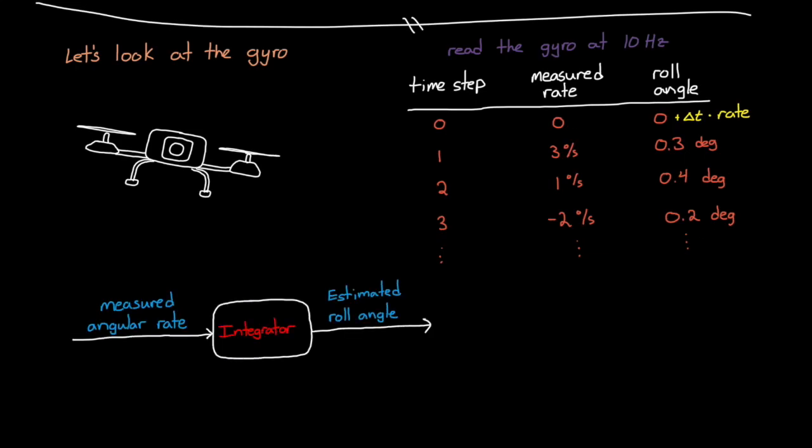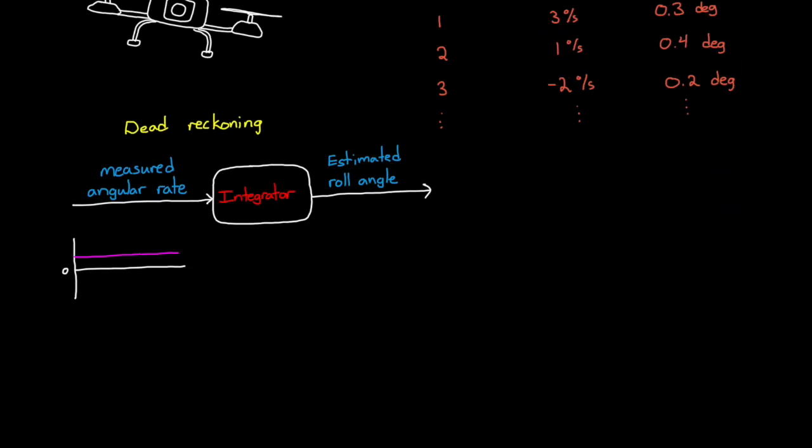That's pretty straightforward, right? Well this type of approach is called dead reckoning, and it's very good for keeping track of motion over short periods of time. How short? Well, it depends on the noise and error characteristics of the gyro.